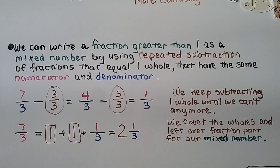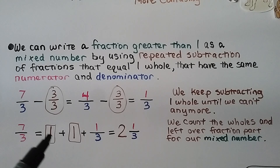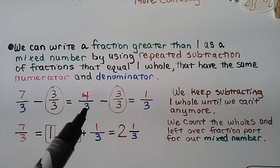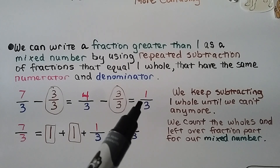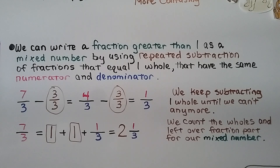We can write a fraction greater than one as a mixed number by using repeated subtraction of fractions equal to one whole (same numerator and denominator). We have seven thirds. We take away three thirds as one whole, leaving four thirds (seven minus three equals four). We take away another three thirds from four thirds, leaving one third. So we have one whole, another whole, and one third — that's two and one third. We keep subtracting one whole until we can't anymore, then count the wholes and the leftover fraction.